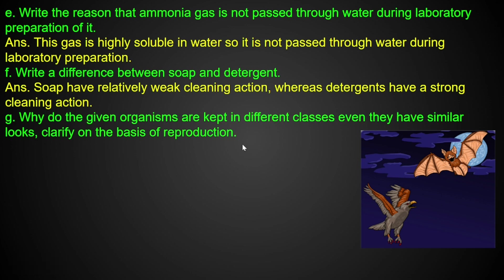Why are the given organisms kept in different classes? We have bat and eagle. The difference is on the basis of reproduction: bat gives birth directly (viviparous), while eagle lays eggs (oviparous).